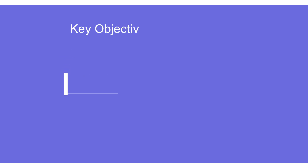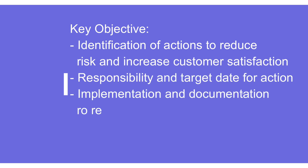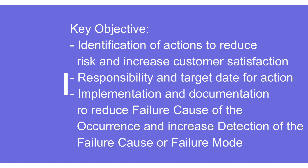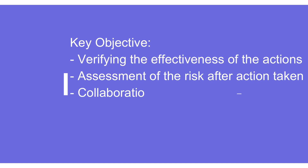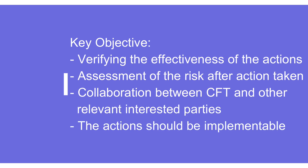There are a few key objectives defined in FMEA first edition for optimization. First, identification of actions necessary to reduce risk and increase customer satisfaction by improving product and process design. Second, assigning responsibility and target dates for the actions. Third, implementation and documentation of actions taken, so that failure cause occurrence can be reduced and the ability to detect the failure cause and mode can be increased. Effectiveness monitoring follows, and this is a collaboration between the cross-functional team and all relevant interested parties including customers.